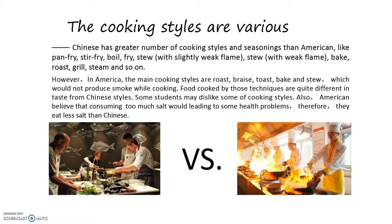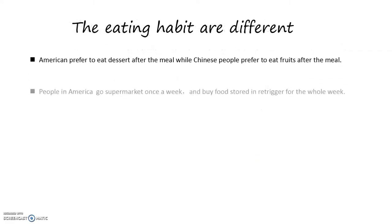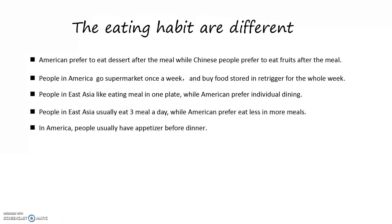The eating habits are also different. Americans prefer to eat dessert after a meal, while Chinese people prefer to eat fruits. People in America go to supermarkets once a week and buy food to store in the refrigerator for the whole week. Chinese people like to eat meals from shared plates at a round table, but Americans prefer to distribute food and eat individually. Chinese people eat three meals a day, but Americans prefer to eat less in more frequent meals, and usually have appetizers before dinner.